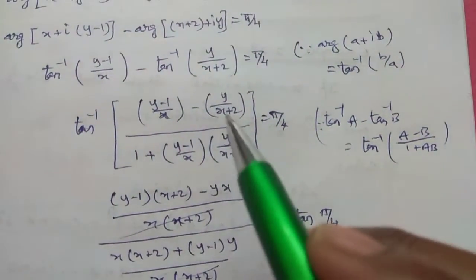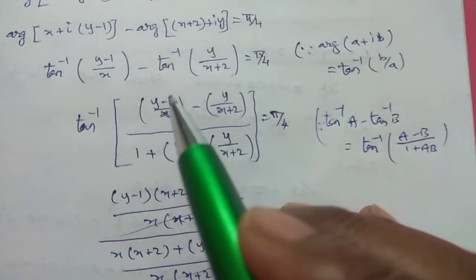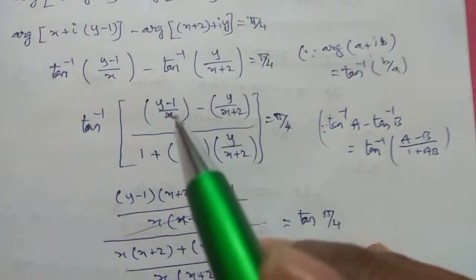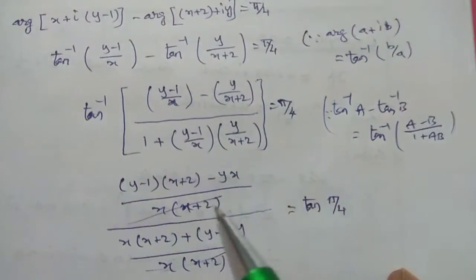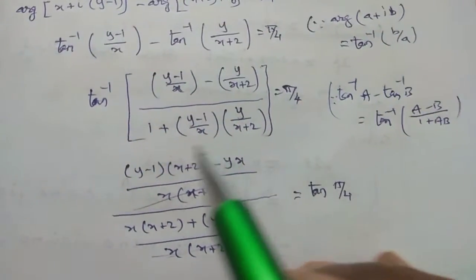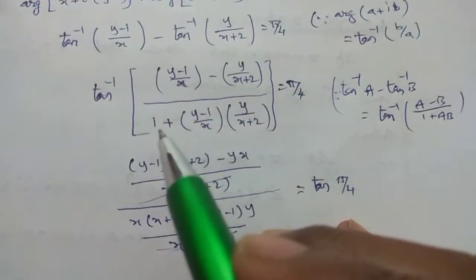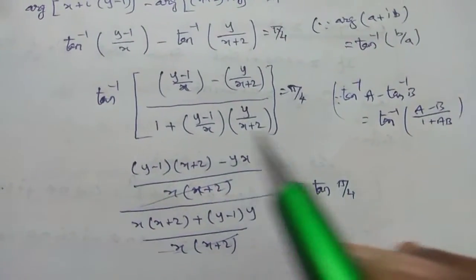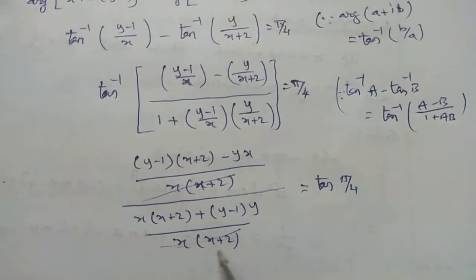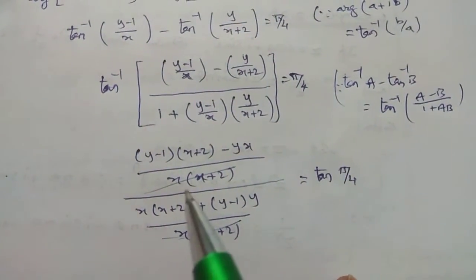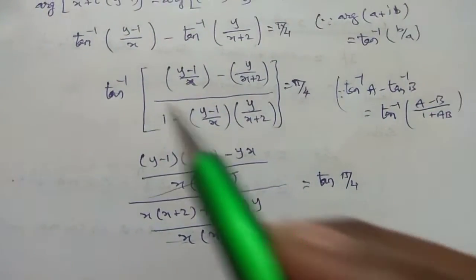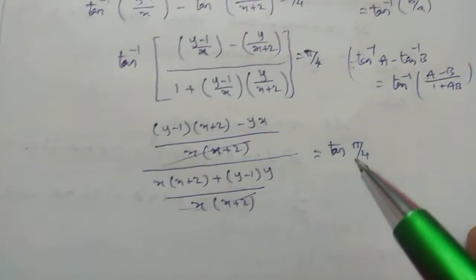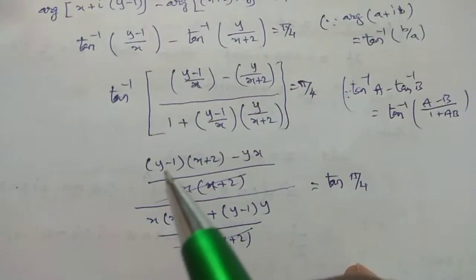Next, cross multiplication: (y minus 1)(x plus 2) minus y·x divided by x(x plus 2), whole divided by x(x plus 2) plus (y minus 1)·y divided by x(x plus 2). The x(x plus 2) terms cancel, equal to tan inverse, which gives tan(π/4).